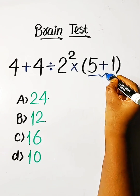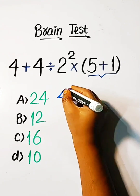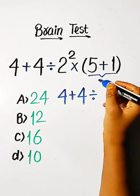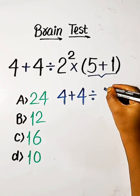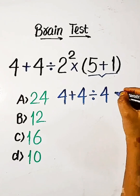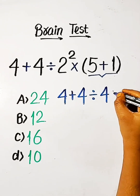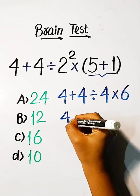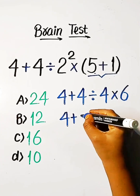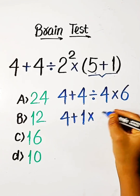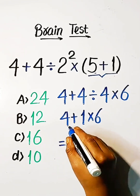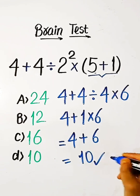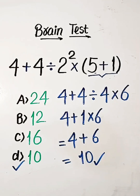We start from the bracket part. 4 plus 4 divided by 2 squared — 2 squared is 4 — into 6. So 4 plus 4 divided by 4, times 6. That gives us 4 plus 6, which equals 10. So 10 is our correct answer — Option D is correct.